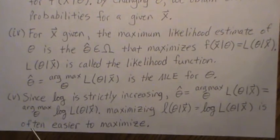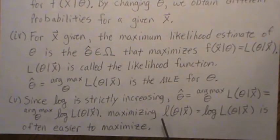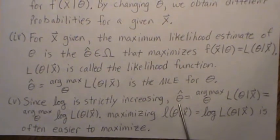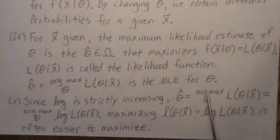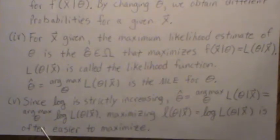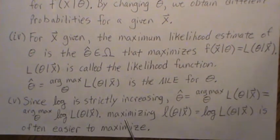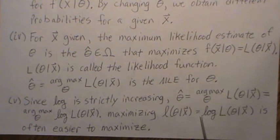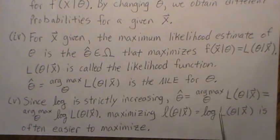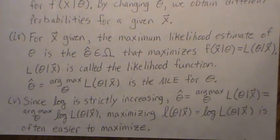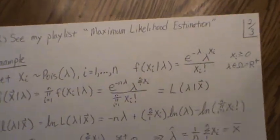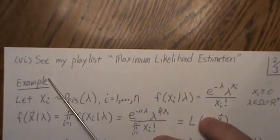Since the log function is strictly increasing, theta hat — the arg max of the likelihood — equals the arg max of the log of the likelihood. We use little l for log-likelihood and capital L for likelihood. Maximizing the log-likelihood is often much easier and gives the same result as maximizing the likelihood function.